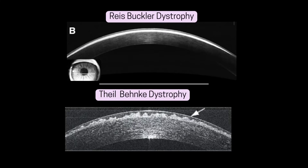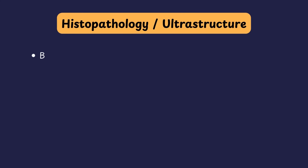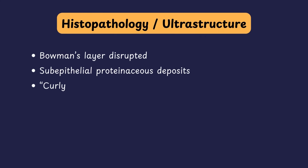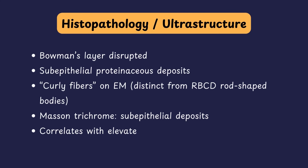The sawtooth-like appearance on OCT is a key differentiator between RBCD and TBCD. On electron microscopy, instead of rod-shaped bodies, characteristic curly fibers are seen, explaining the irregular surface clinically. On histopathology, the Bowman's layer is disrupted and replaced by sub-epithelial proteinaceous deposits of collagen or hyaline, which stain well with Masson's trichrome.